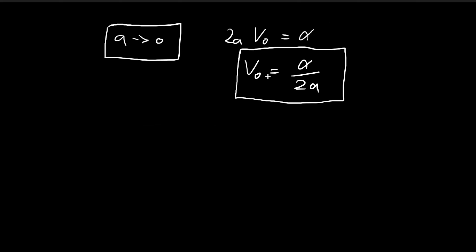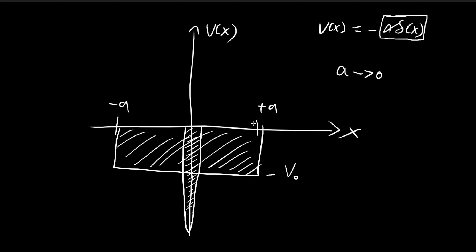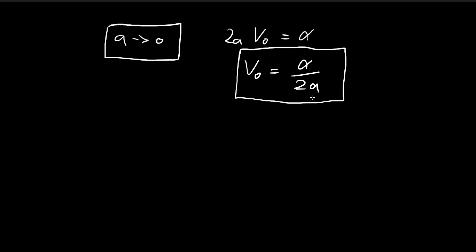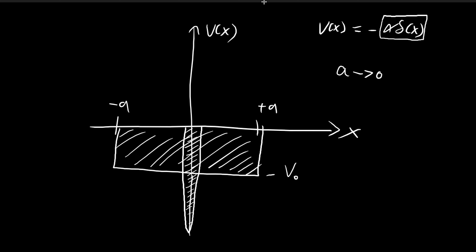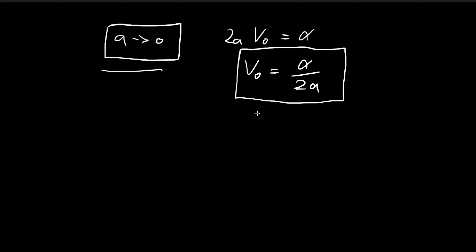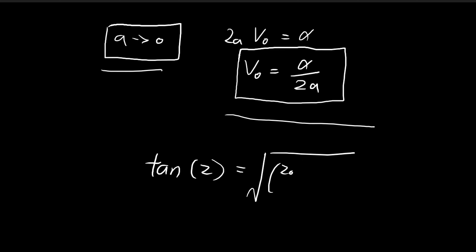The results we obtained for the finite square well allow us to reproduce the allowed energy levels for the Dirac delta potential. Let's derive those energy levels based on these two restrictions. Recall that the energy levels of the finite square well are given by this equation — solving for Z gives the allowed energy levels. Note the constant Z0 appearing here.